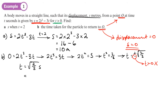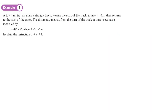Using a calculator to convert to a decimal: √(2/3) ≈ 0.816 seconds to 3 significant figures. You can give either the exact or decimal form as your answer.